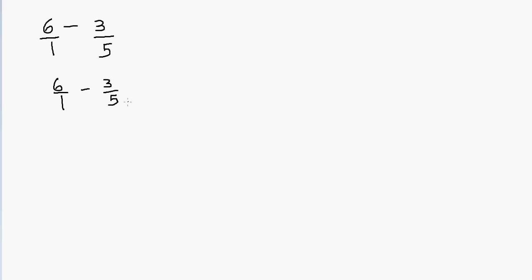We cannot multiply any whole number into 5 to make it 1. But we can multiply something into 1 to make it 5. So I'm going to multiply 6 over 1 by 5 over 5. Why do I multiply 5 in the numerator as well? Because I cannot just multiply 5 in the denominator — that would change the value of the fraction. Since 5 over 5 equals 1, I'm really just multiplying by 1, so I'm not changing the value at all. Whatever you multiply in the denominator, you must multiply the same thing in the numerator.